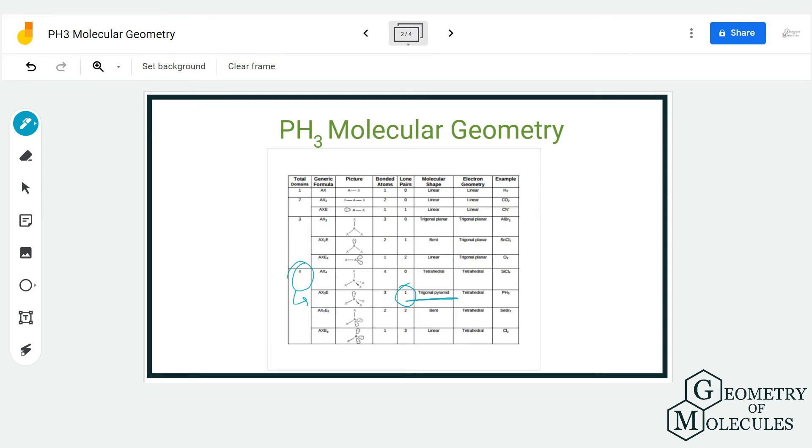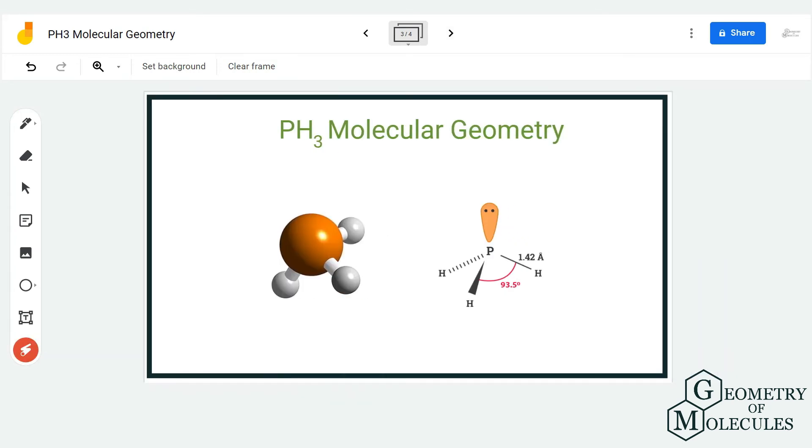As per this table, the molecular geometry of PH3 molecule will be trigonal pyramidal and the bond angle is shown here. Generally the bond angle is much higher, around 109.5 degrees, but as there is a lone pair present here it will decrease this angle. If there is a lone pair on the central atom, it generally distorts the bond angle and hence there is a reduction in the bond angle.